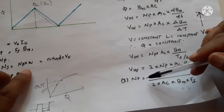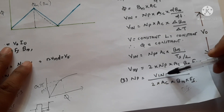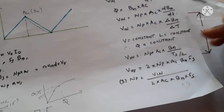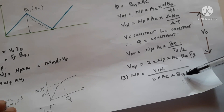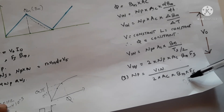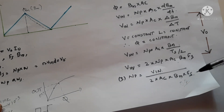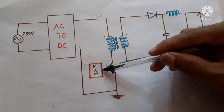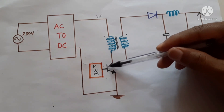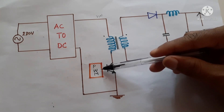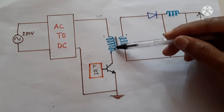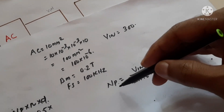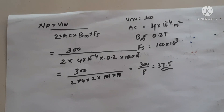So for a forward converter, we calculate the number of primary turns using this equation: knowing the input voltage, the area of the core from the datasheet, the core material (ferrite gives Bm = 0.2 tesla), and the operating frequency selected from the PWM IC. Plugging in all these values gives us the number of primary turns.